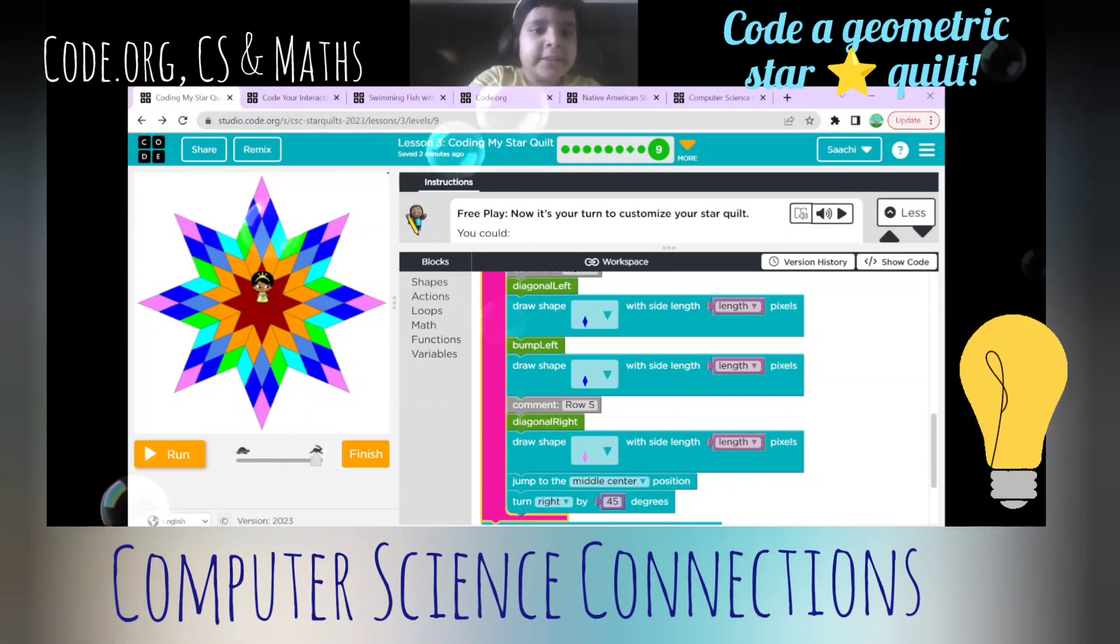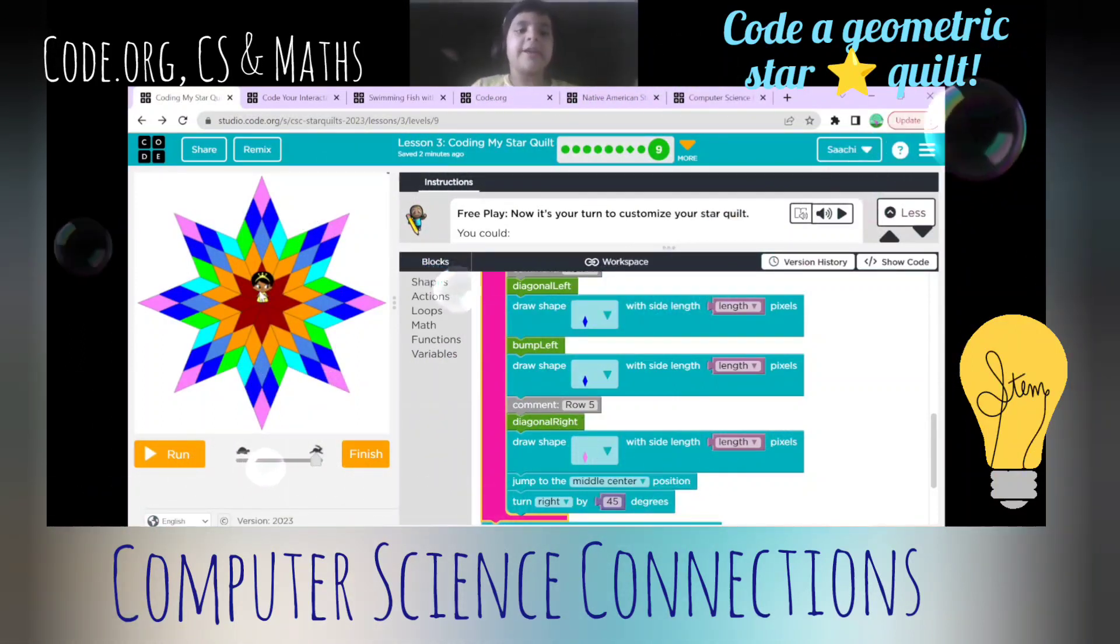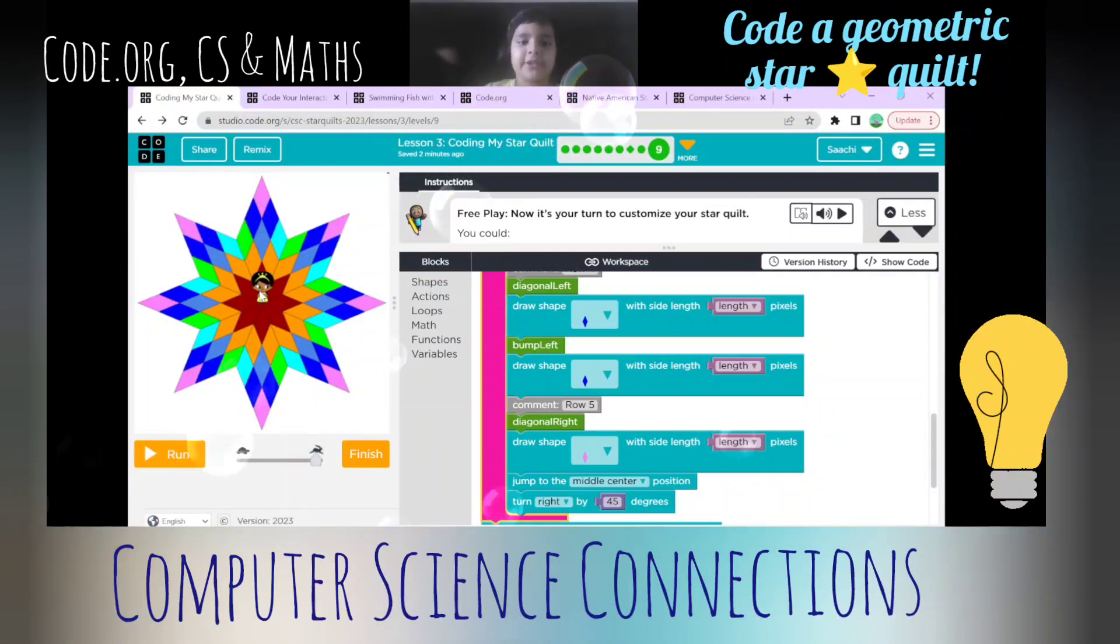And finally, the coordinates. Coordinates always have a unique position. So if you want to make this project, you have to know where to place it. Let's say I want to place this princess, so I have to know where to place it: top right, top left, middle, bottom right, bottom left.